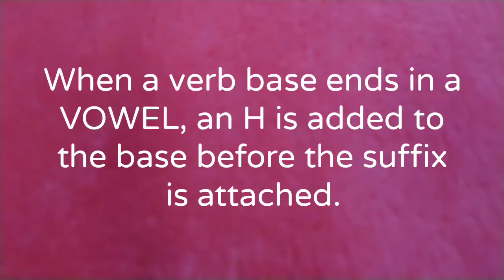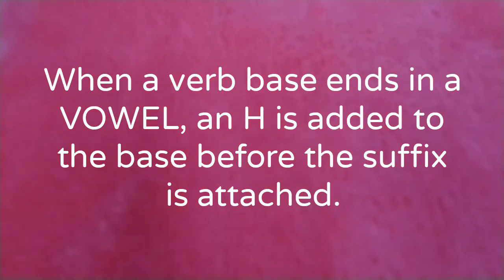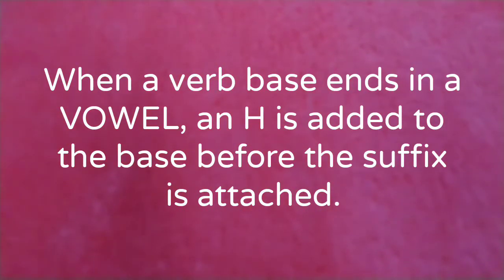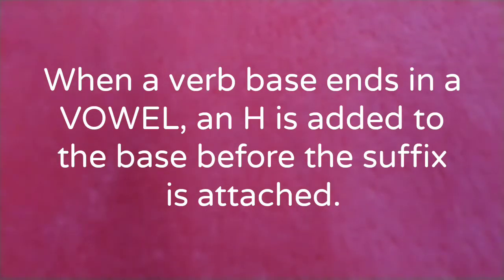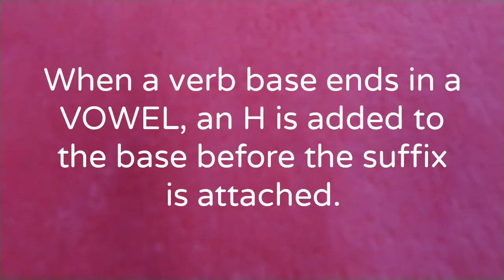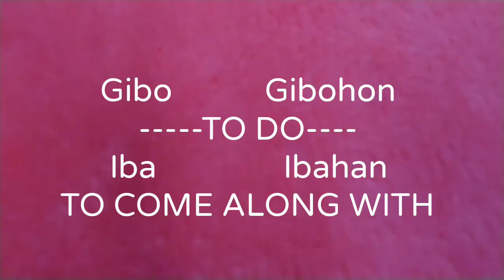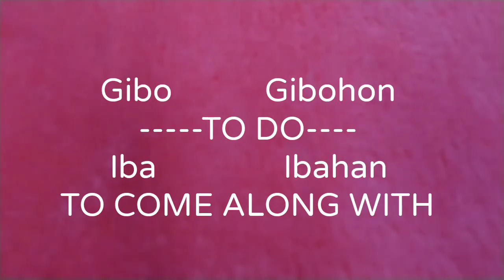When a verb base ends in a vowel, an 'h' is added to the base before the suffix is attached. For example: gibo, gibohon; iba, ibahan.